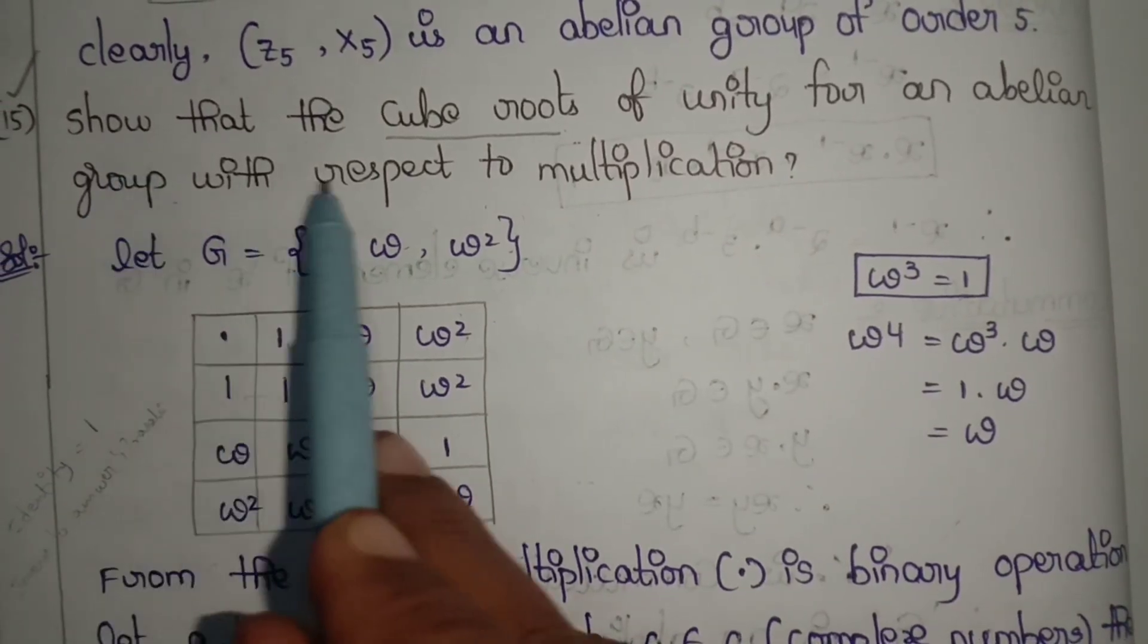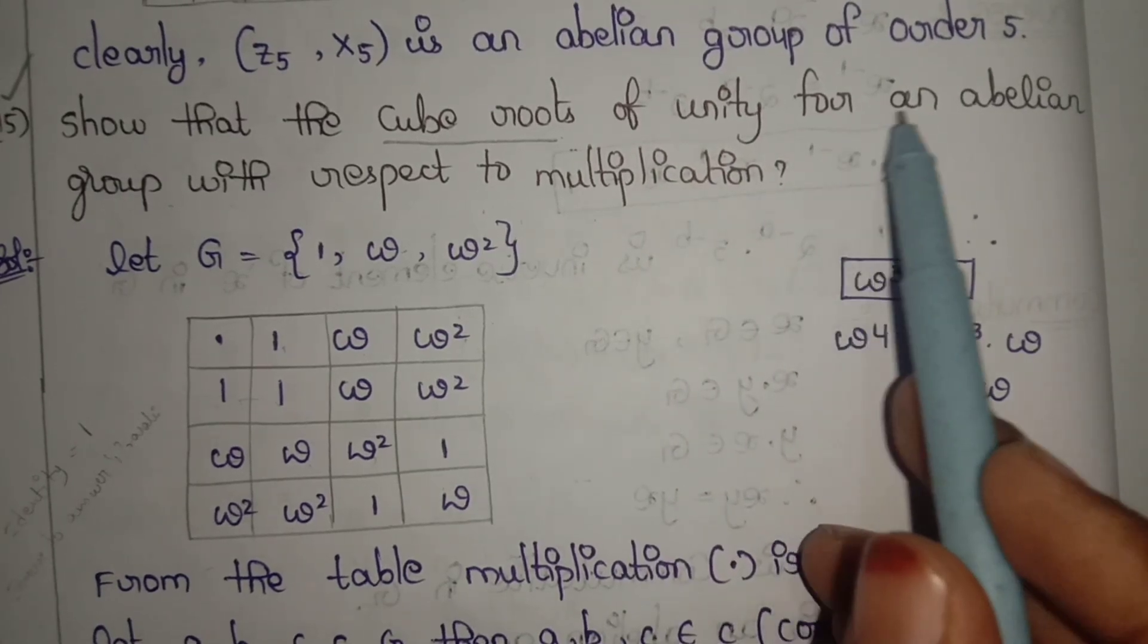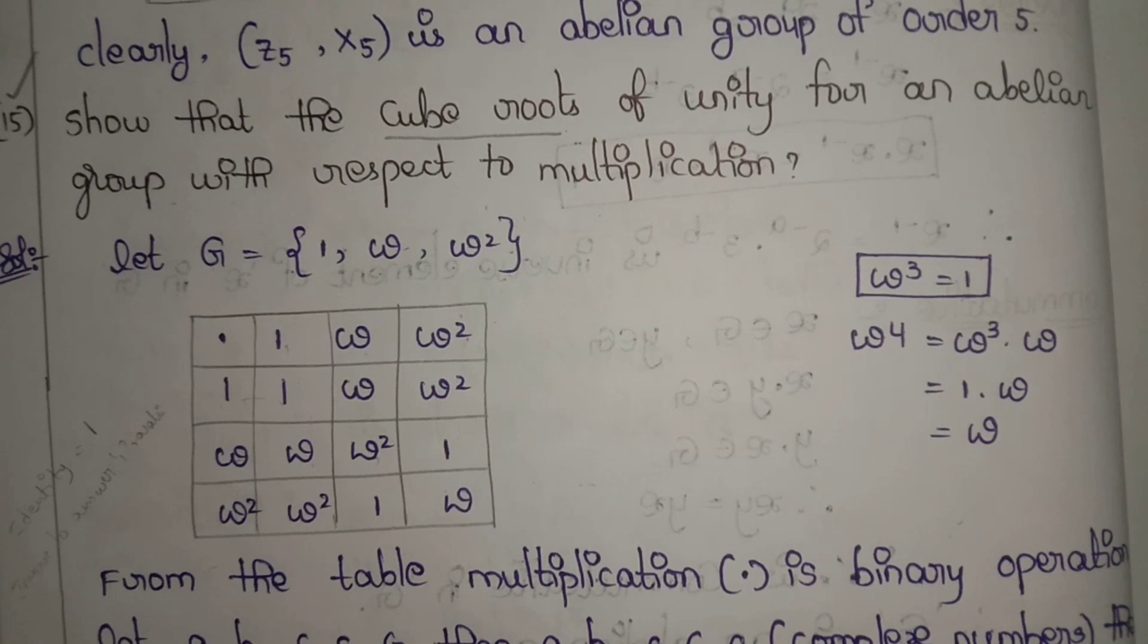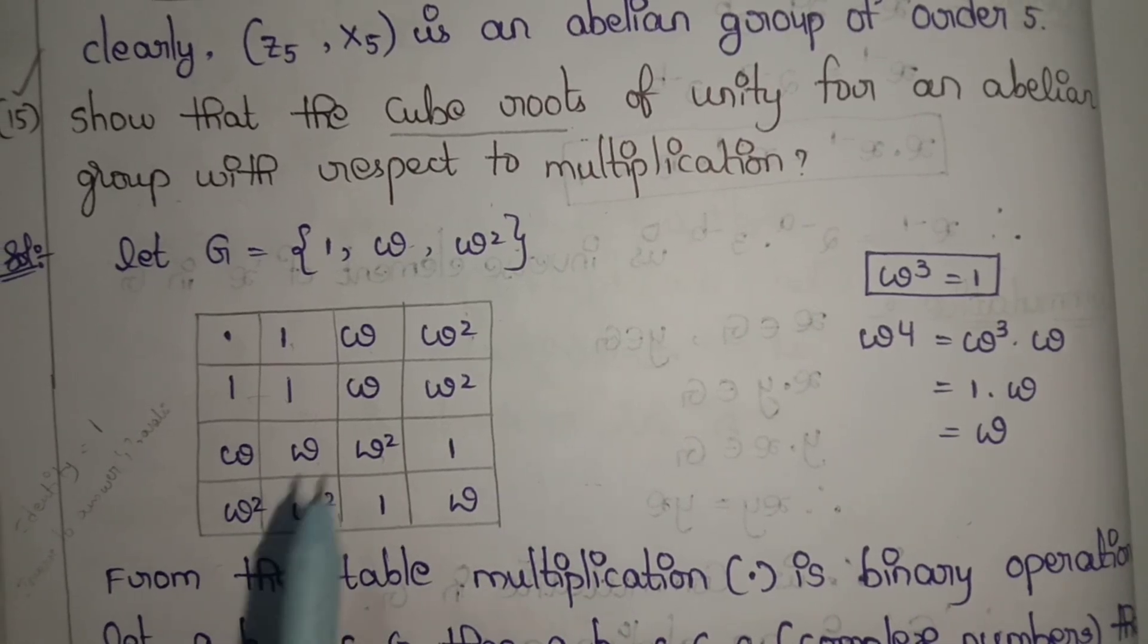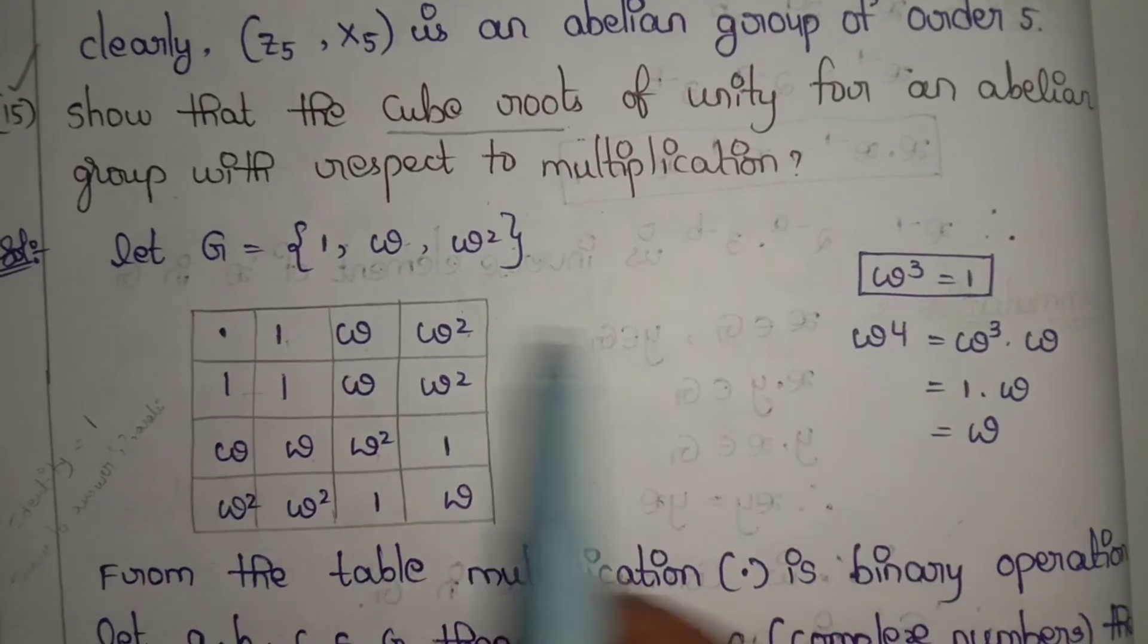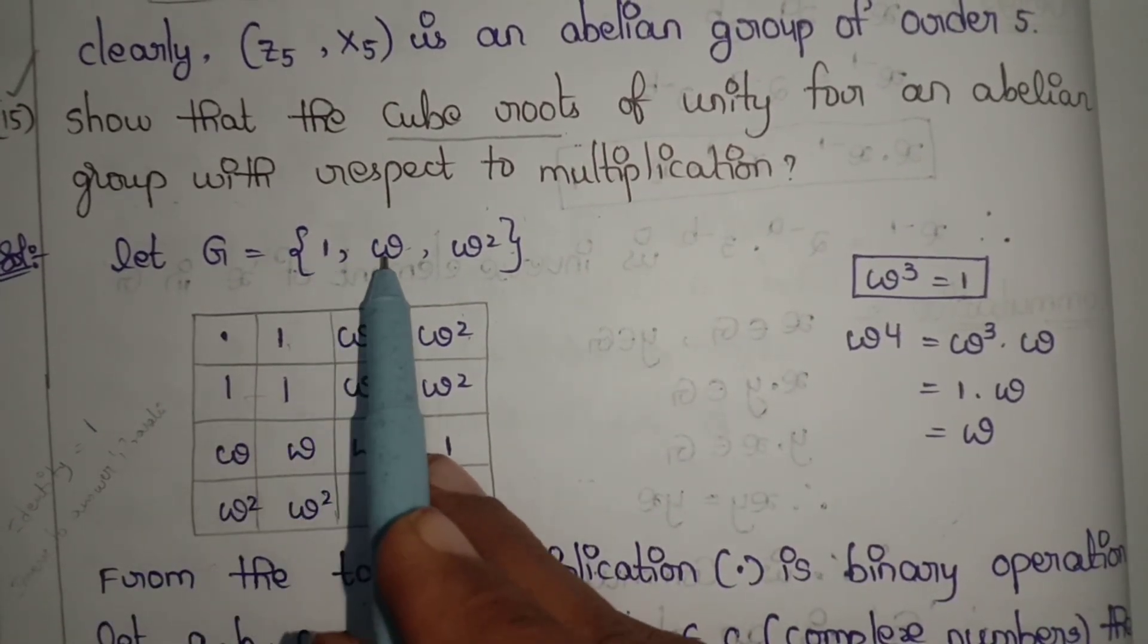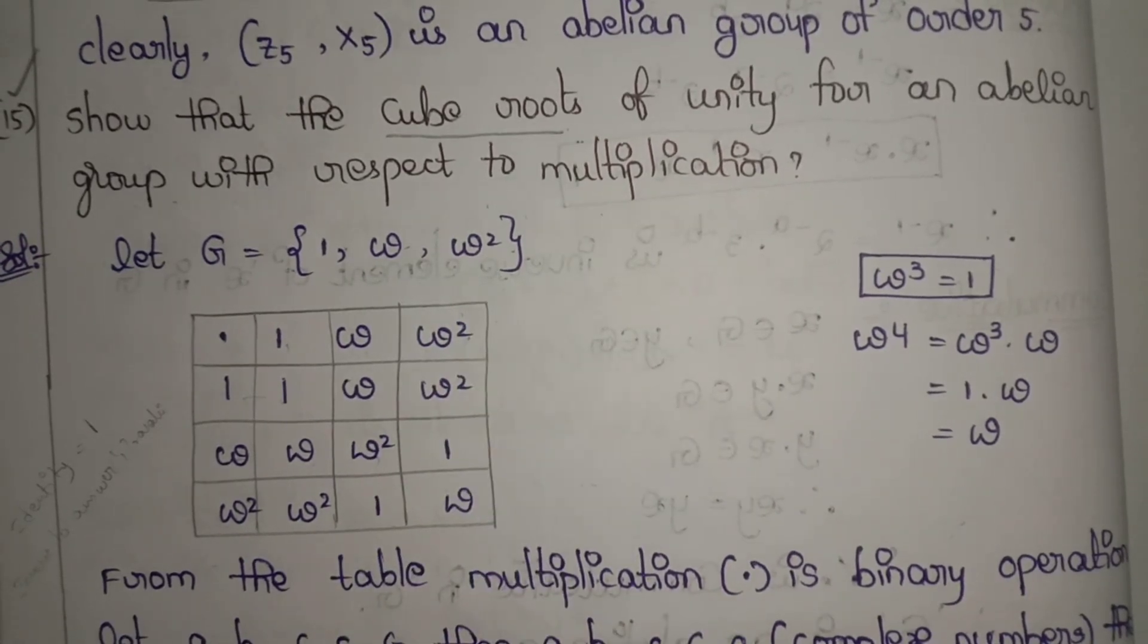Next question: show that the cube roots of unity form an abelian group with respect to multiplication. So cube roots of unity, composition table form. Let capital G equals the set of 1, omega, omega squared. So we need a composition table.